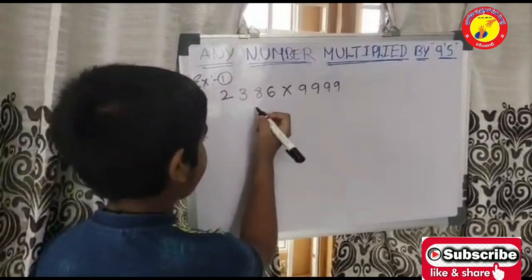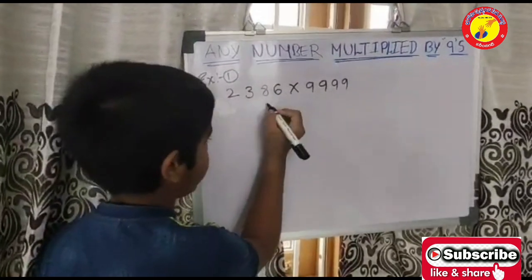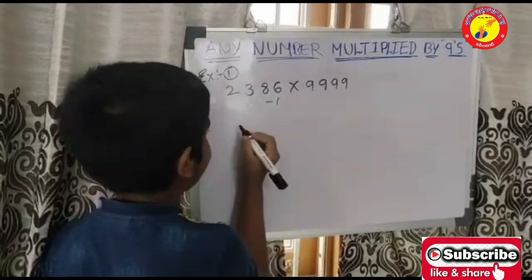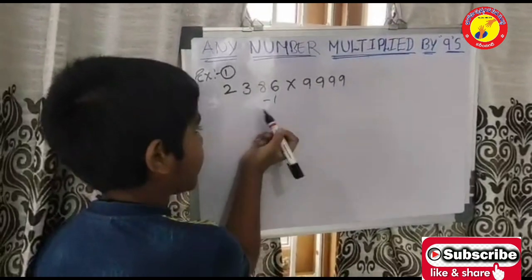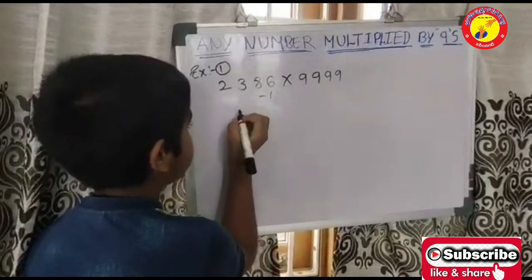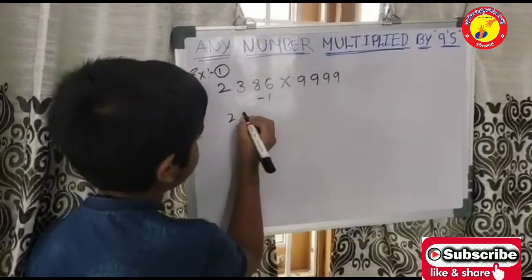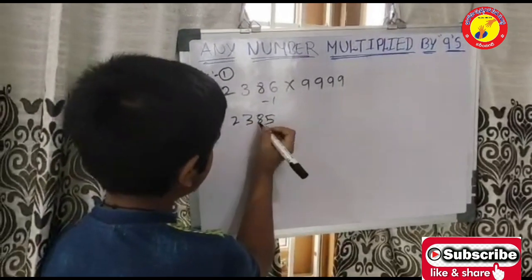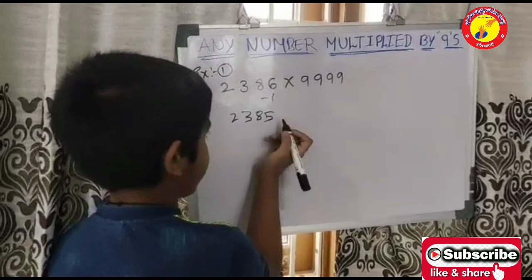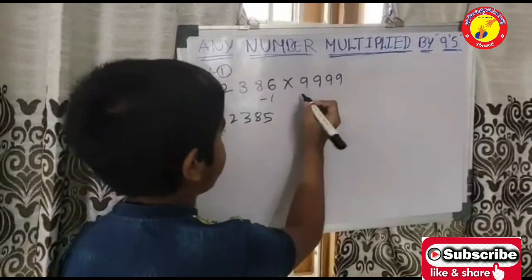Now, we will minus number 1. 2386 minus 1 is equal to 2385. Now, this number marked as minus by 9.